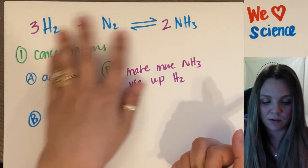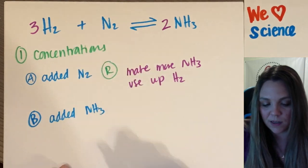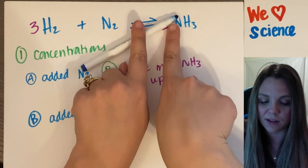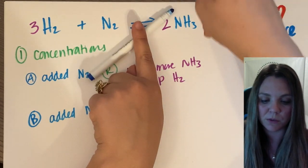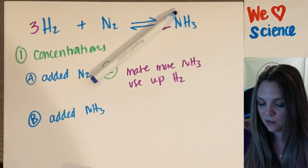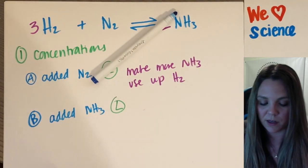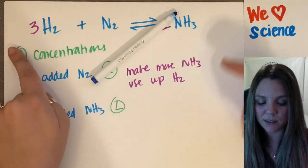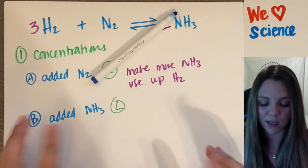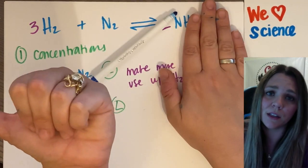If I added NH₃, using the pencil method this side comes up, and I would slide to the left. I would shift to the left. So I'm going to make more reactants and use up some products if I added NH₃. I added stuff to the right, so my equilibrium is like, 'I have too much stuff on the right — let's make more stuff on the left to even it out.'